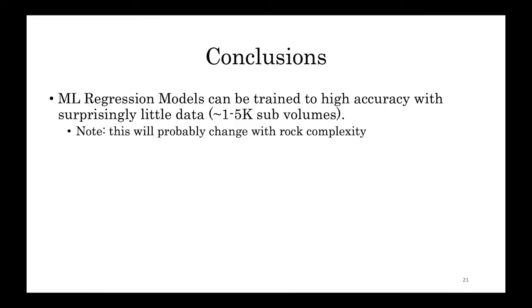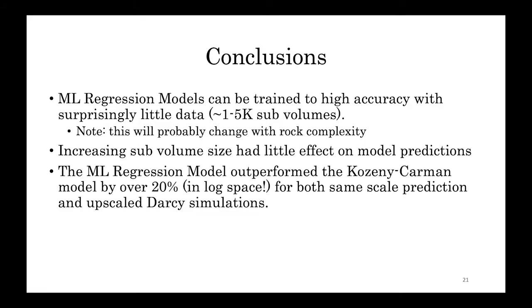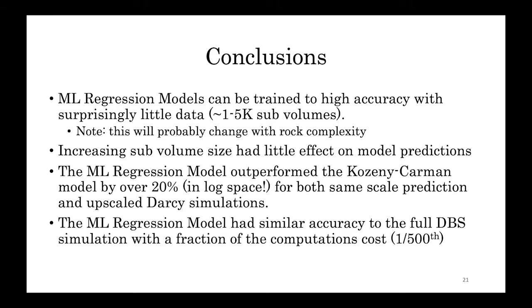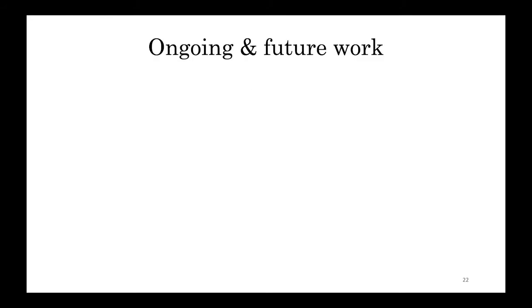So to conclude, machine learning regression models can be trained to high accuracy with surprisingly little data, between one and 5,000 sub-volumes. Note that this will probably change with different rock samples. Increasing sub-volume size had little effect on model predictions. The machine learning regression model outperformed the Kozeny-Karman model by over 20% in log space for both same-scale prediction and upscale Darcy simulations. And the machine learning regression model had similar accuracy to the full Darcy-Stokes-Brinkman simulation with a fraction of the computational cost.